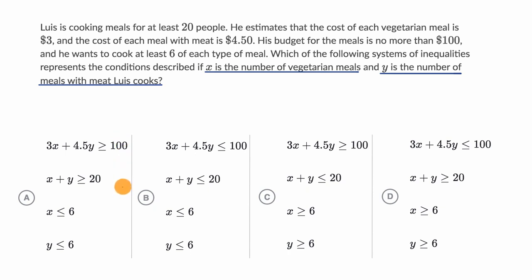All right, now let's work through it together. It's important to emphasize that they've already defined the two key variables for us. X is the number of vegetarian meals, and Y is the number of meals with meat. So let's look at each of the constraints they give us, and each of these can set up a different inequality.